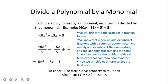We will first write the problem in fraction format. We know that when we add or subtract fractions with a common denominator, we merely add or subtract the numerators, and the denominator remains the same. So we can write the problem with each term over the common denominator. We have 40x squared minus 15x plus 5 over 5, and since they have the same denominator, each term can be separated: 40x squared over 5, minus 15x over 5, plus 5 over 5. Then we simplify each term to get the final result.